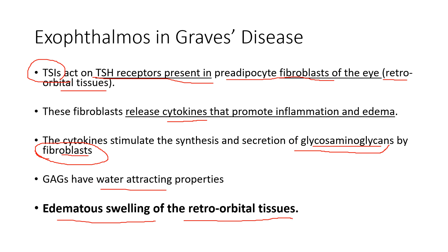This edematous swelling of the retroorbital tissues protrudes the eyeballs. Retroorbital means behind the eyeball, so the tissues behind the eyeball are swollen, pushing the eyeball forward and leading to the protruded appearance of the eyeballs. That is known as exophthalmos, or protrusion of the eyeball.